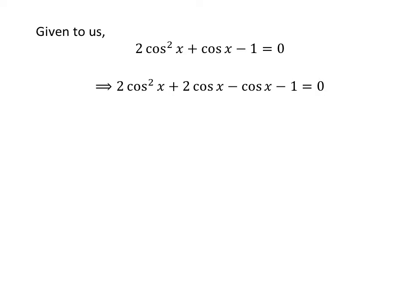Let us apply the quadratic factorization technique here. We can write the above equation as 2 times square of cosine of x plus 2 times cosine of x minus cosine of x minus 1 is equal to 0. Taking out the common factor 2 times cosine of x in the first two terms, and taking out the common factor minus 1 from the next two terms, gives us 2 times cosine of x times cosine of x plus 1, minus cosine of x plus 1, is equal to 0.